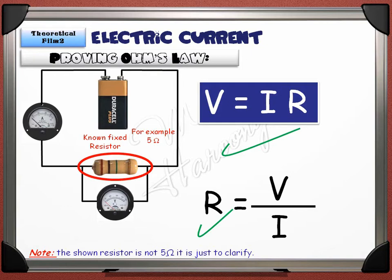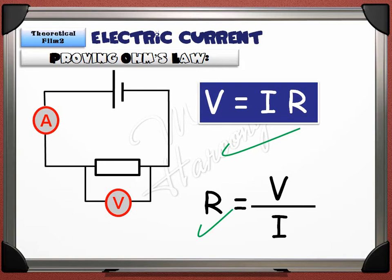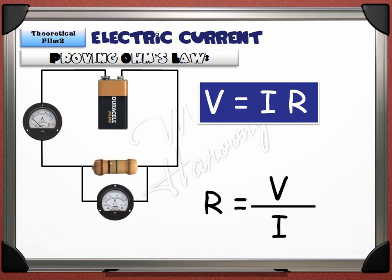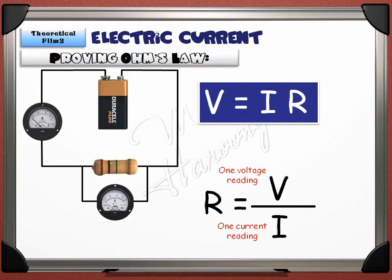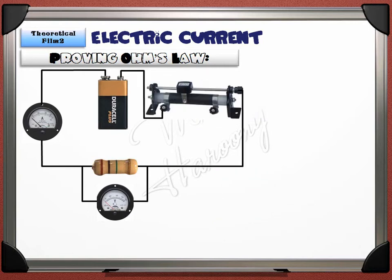Using a single pair of results is a practical mistake. In physics, we improve reliability by repeating and taking the average, but even better is taking different values of V against I for the same resistor and drawing a graph. To get different values, add a variable resistor in series with the fixed resistor. Move the slider to adjust the current, take corresponding ammeter and voltmeter readings, repeat several times, and tabulate results. Draw a graph with current on the x-axis and voltage on the y-axis, plot the points, and draw a line of best fit.